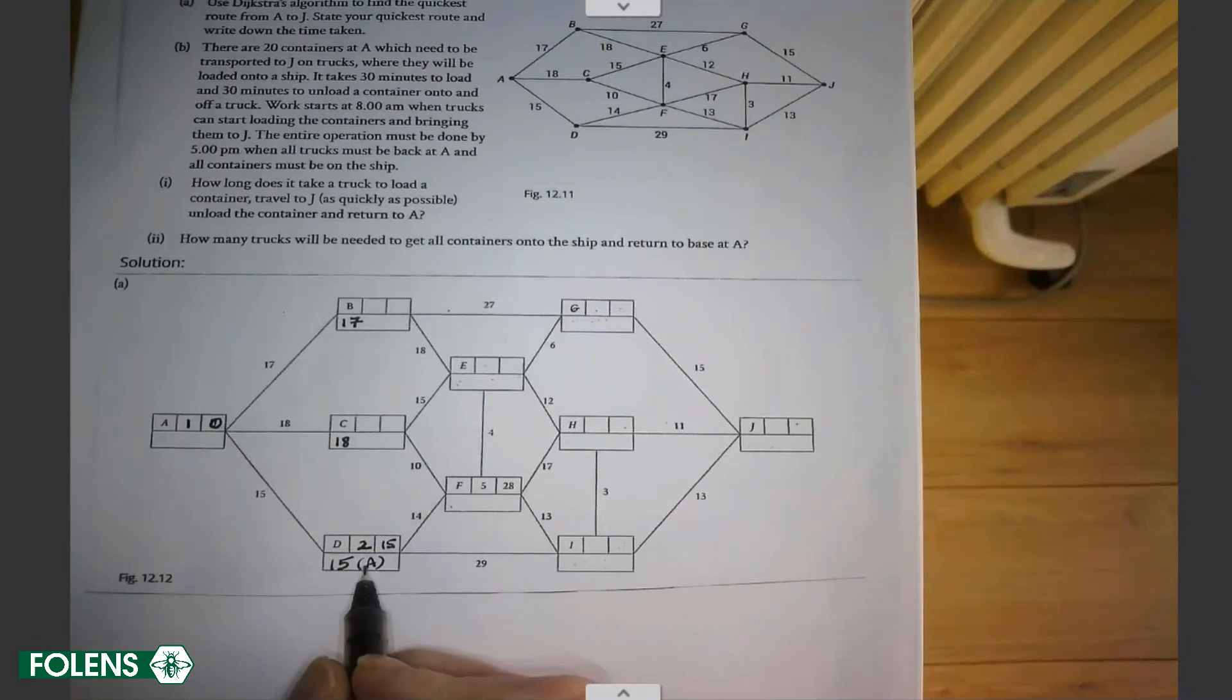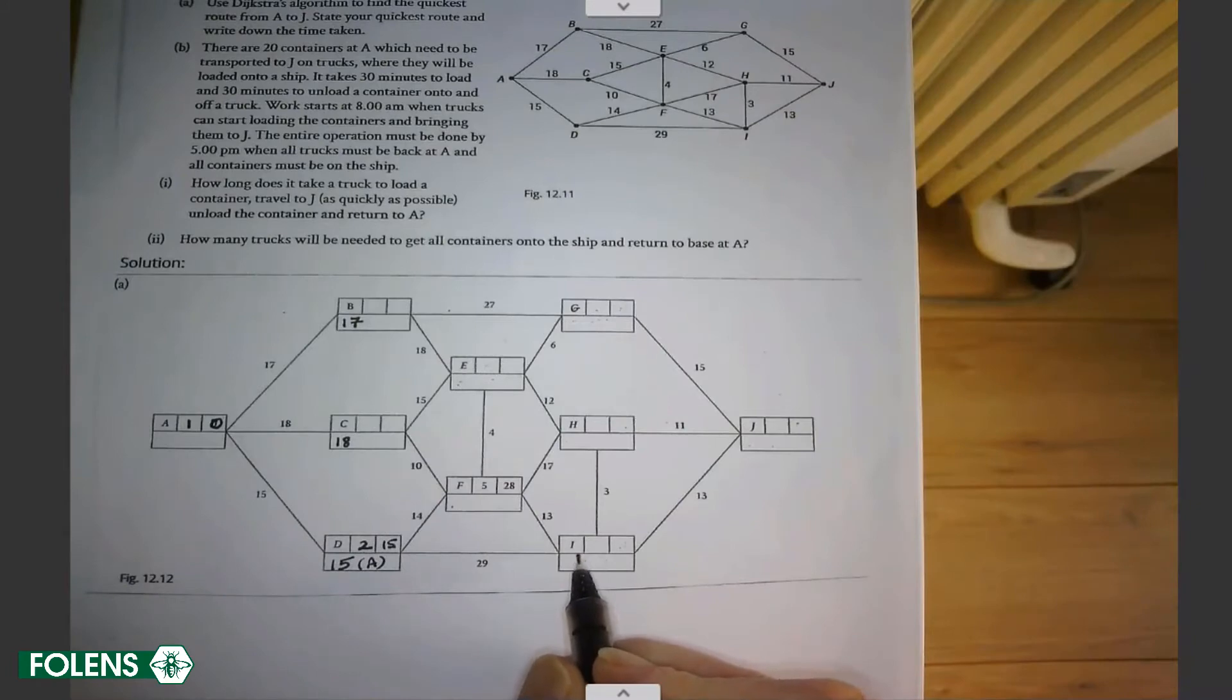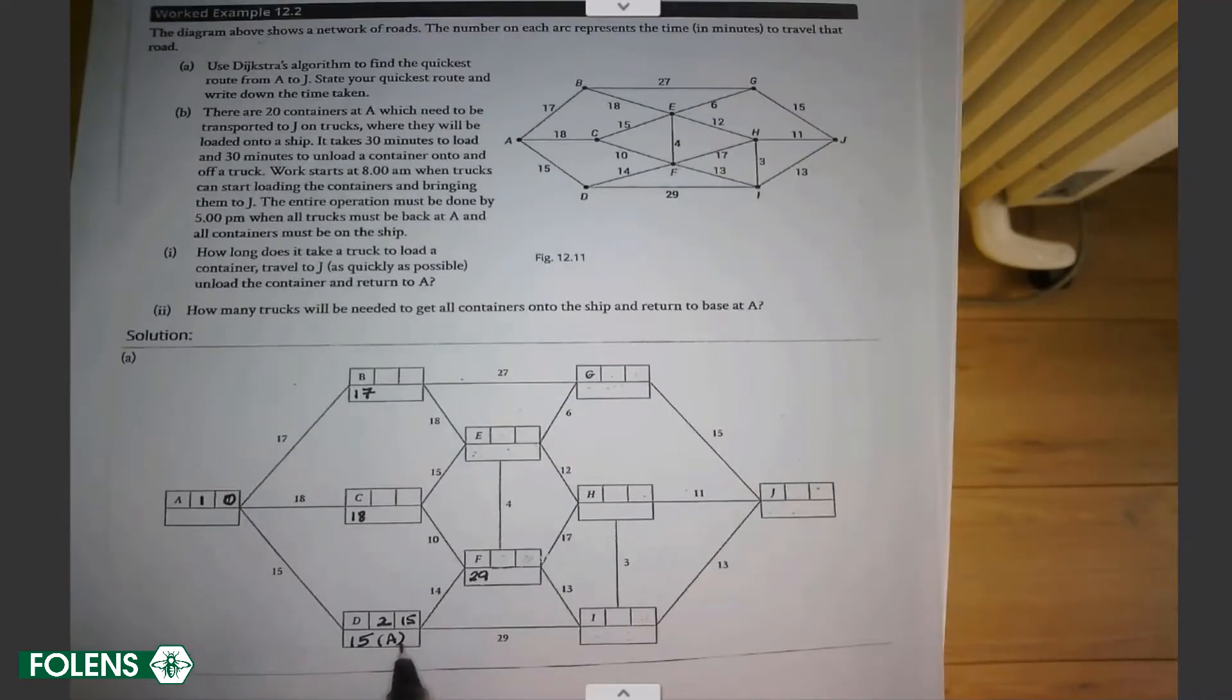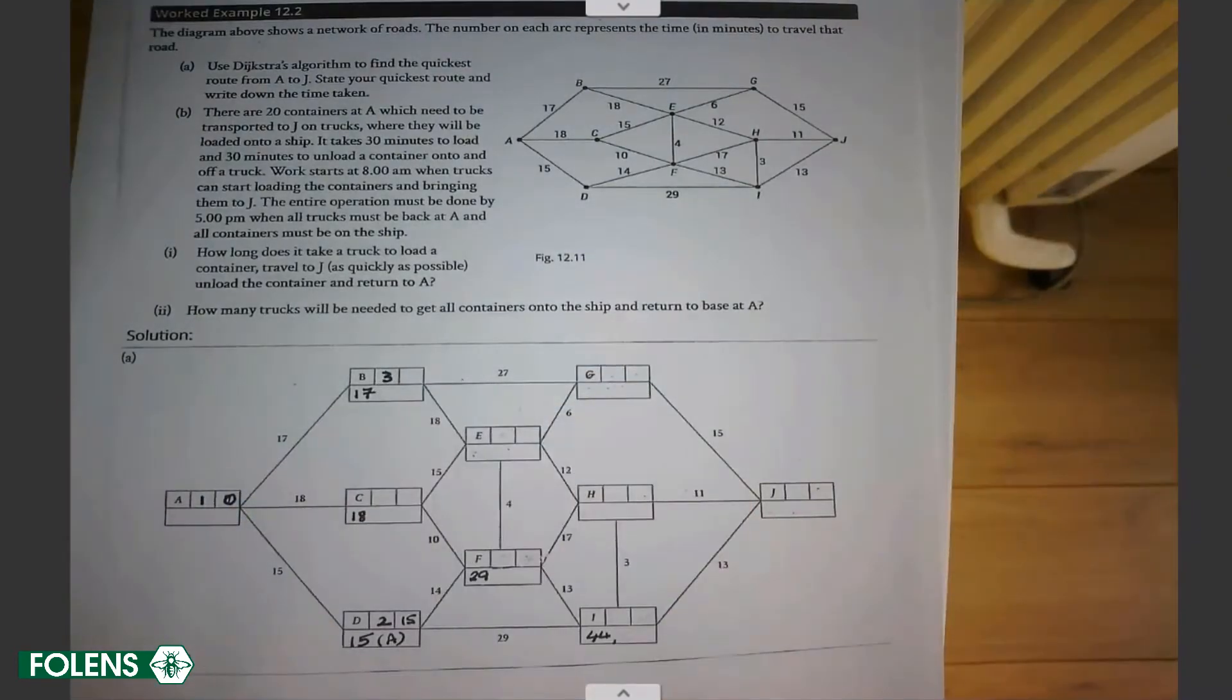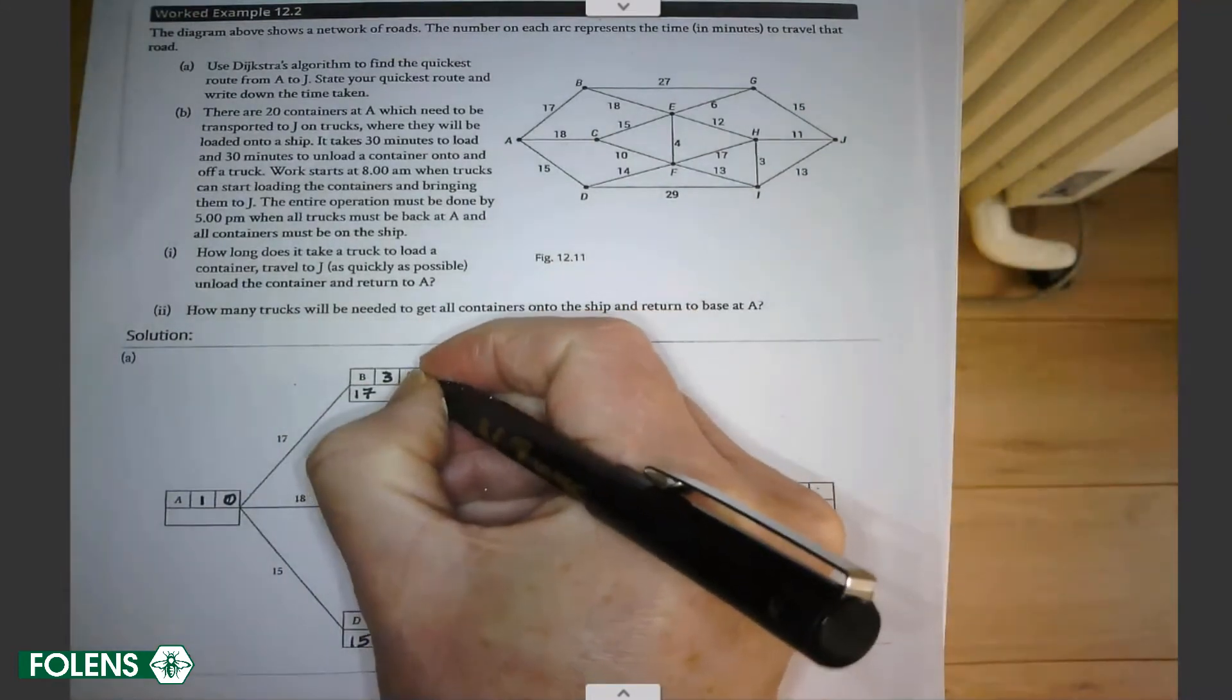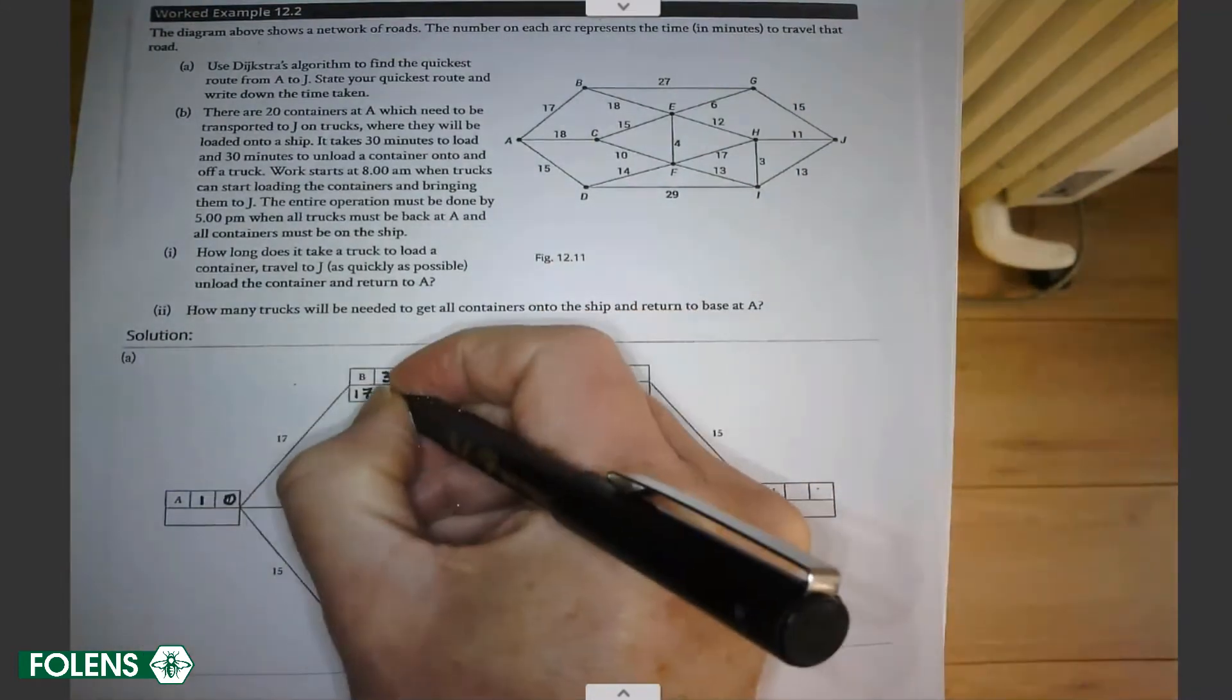Having established that this is our second one with the final value 15, it moves on to F and to I. So we fill in working values for F and for I. 15 it takes to D. Plus 14 is 29. D has a final value of 15. Added to 29 gives you 44. So that's the working value for I. And now we look at all of our working values. 17, 18, 29 and 44. Well, the lowest of those is 17. So B becomes our third final value with a final value of 17. And where did it come from? It came from A.